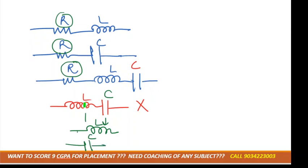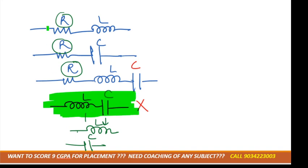The L-C combination is not used because inductor and capacitor form LC oscillations — as you studied in 12th class. The inductor stores energy in magnetic form and the capacitor stores energy in electrical form. They keep exchanging energy with each other, forming a continuous LC oscillation. So we don't use this kind of combination.